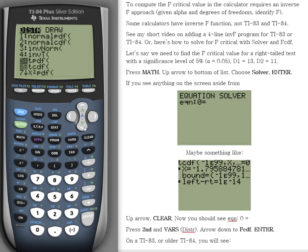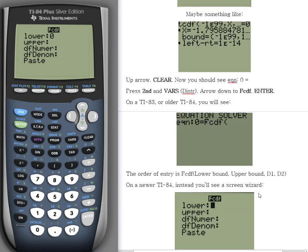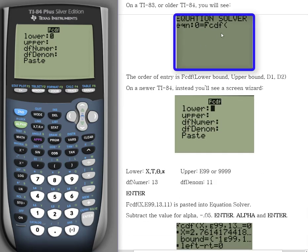Press the second button and VARS to go into the distribution menus. Arrow down until you find FCDF and enter. On a TI-83 or older TI-84, you'll see something that looks like the image at right.